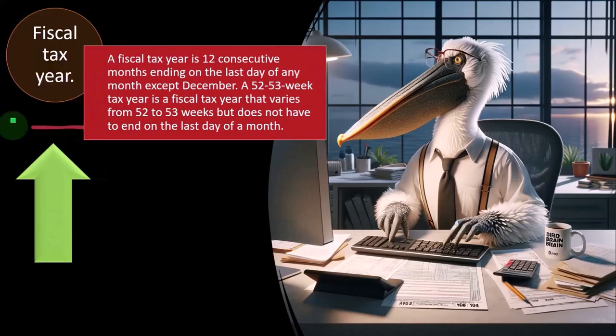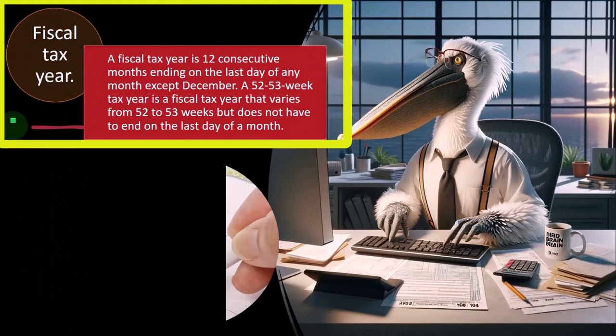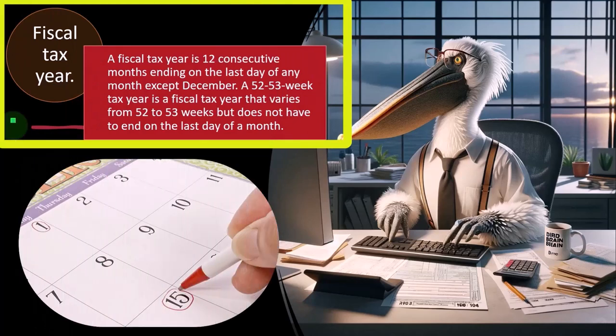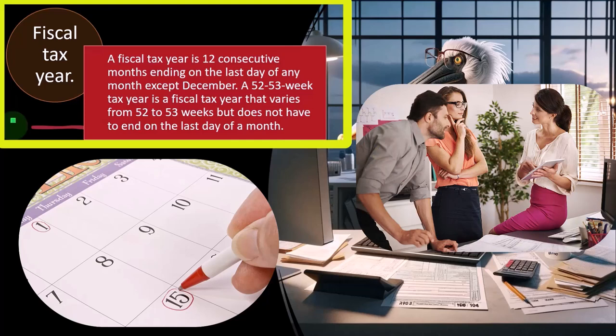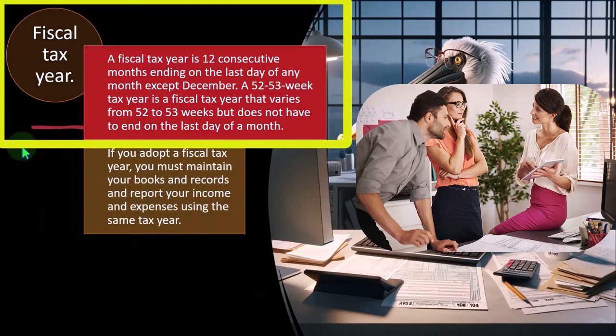A fiscal tax year is 12 consecutive months ending on the last day of any month except December. A 52-53 week tax year is a fiscal tax year that varies from 52 to 53 weeks but does not have to end on the last day of a month. This gets a bit technical because a year has about 52 to 53 weeks, so we have to be consistent with the number of weeks in the year when choosing something other than the calendar year.